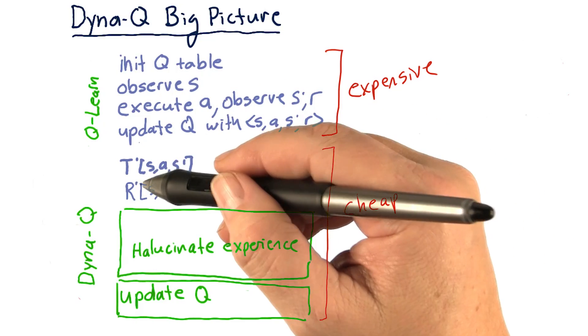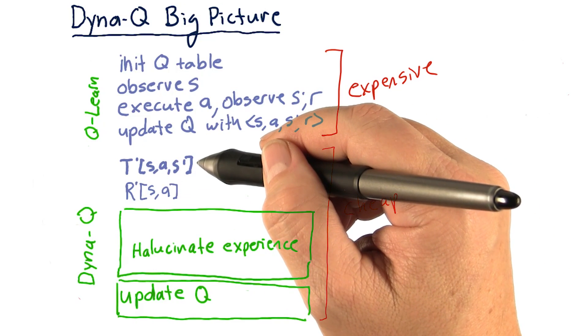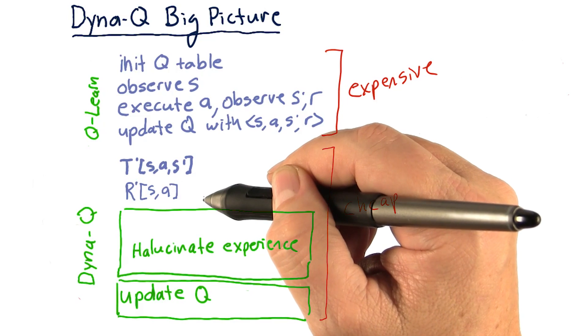so I'm calling it T prime for the moment, which represents our transition matrix, and we want to update our reward function.